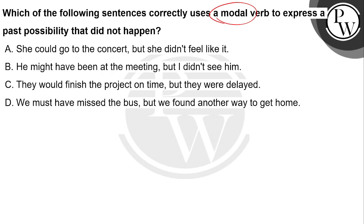But what do you want to express here? Past possibility — which is not happening. Past possibility is to see: could, request to do, would.